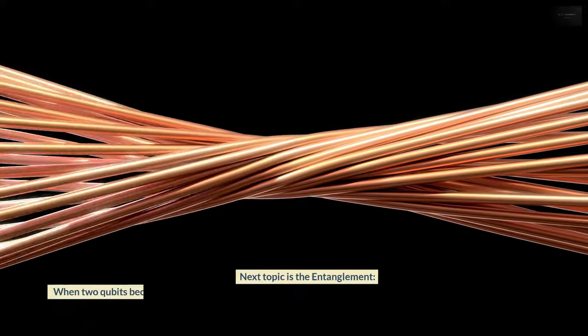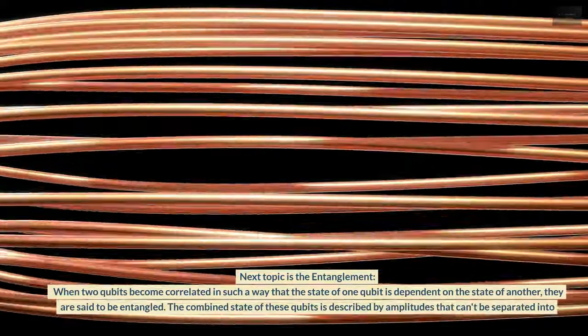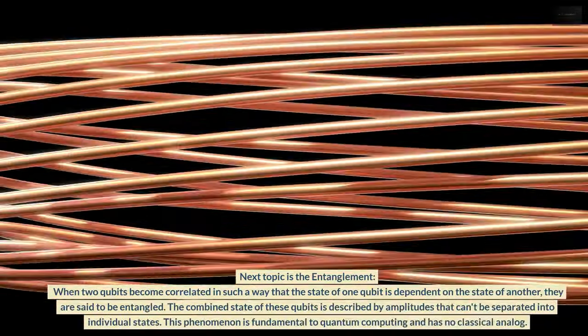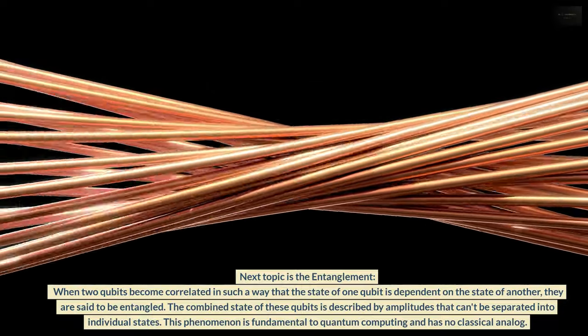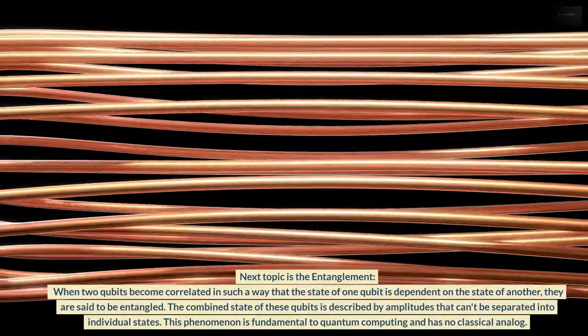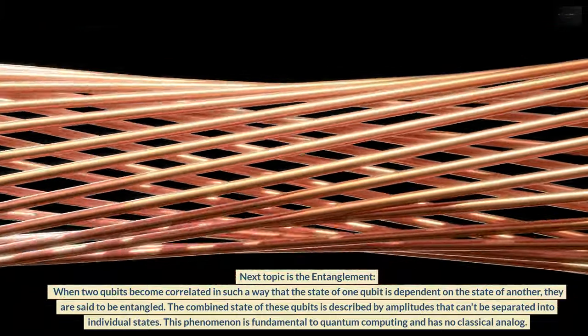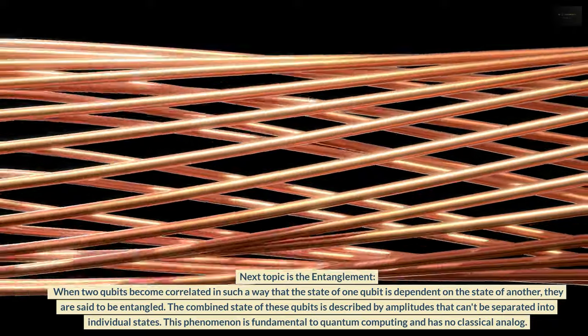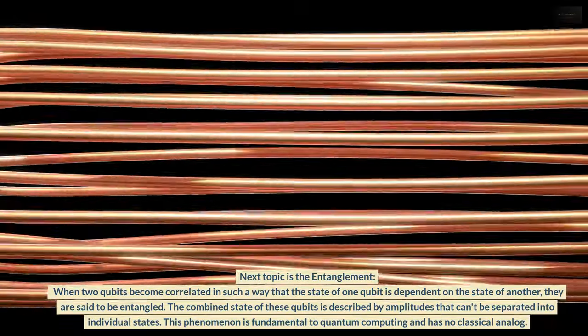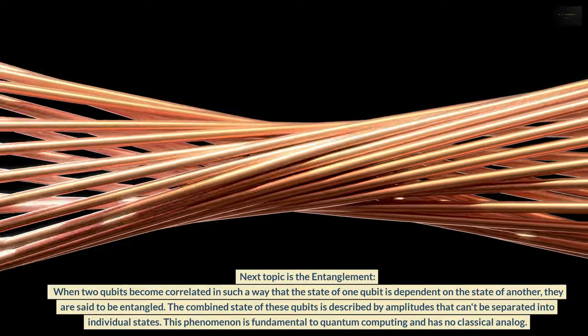Next topic is the entanglement. When two qubits become correlated in such a way that the state of one qubit is dependent on the state of another, they are said to be entangled. The combined state of these qubits is described by amplitudes that can't be separated into individual states. This phenomenon is fundamental to quantum computing and has no classical analog.